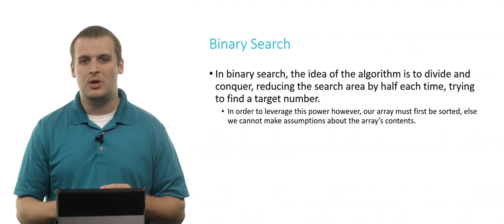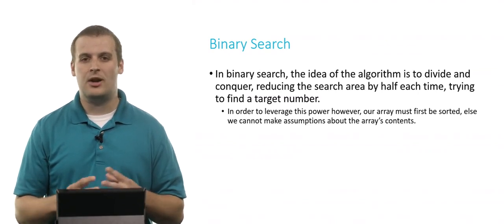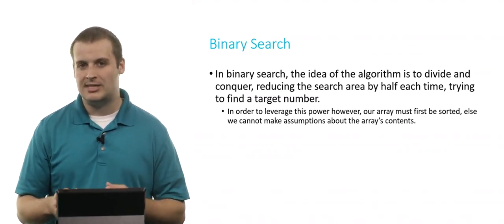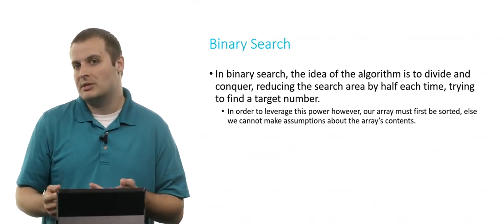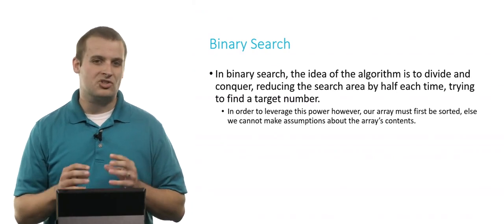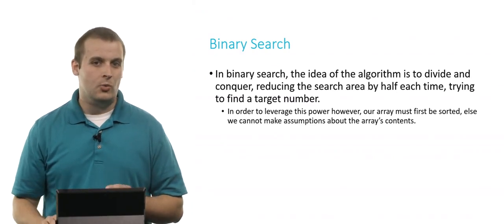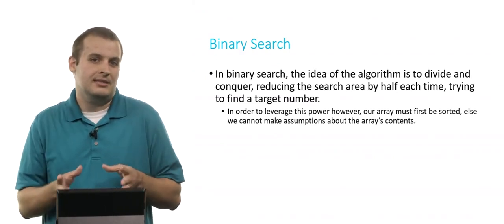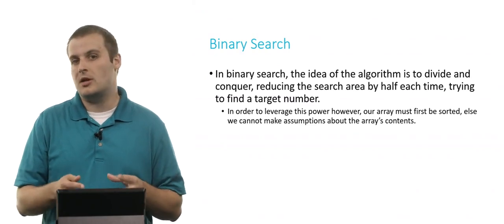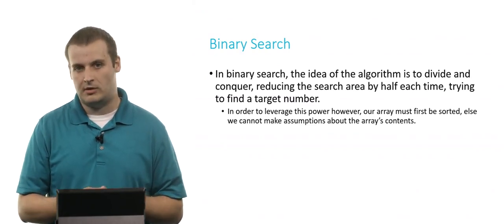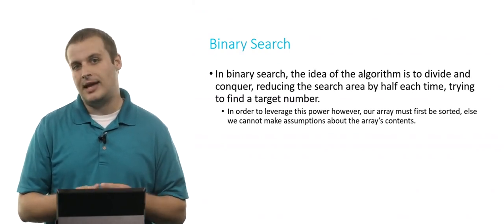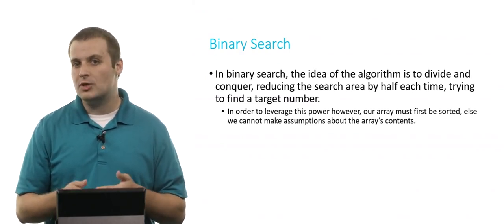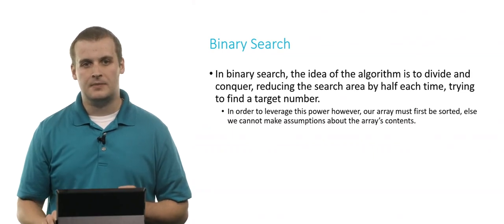If the array is a complete mix-up, we can't just out of hand discard half of the elements, because we don't know what we're discarding. But if the array is sorted, we can do that, because we know that everything to the left of where we currently are must be lower than the value we're currently at, and everything to the right must be greater than the value we're currently looking at.